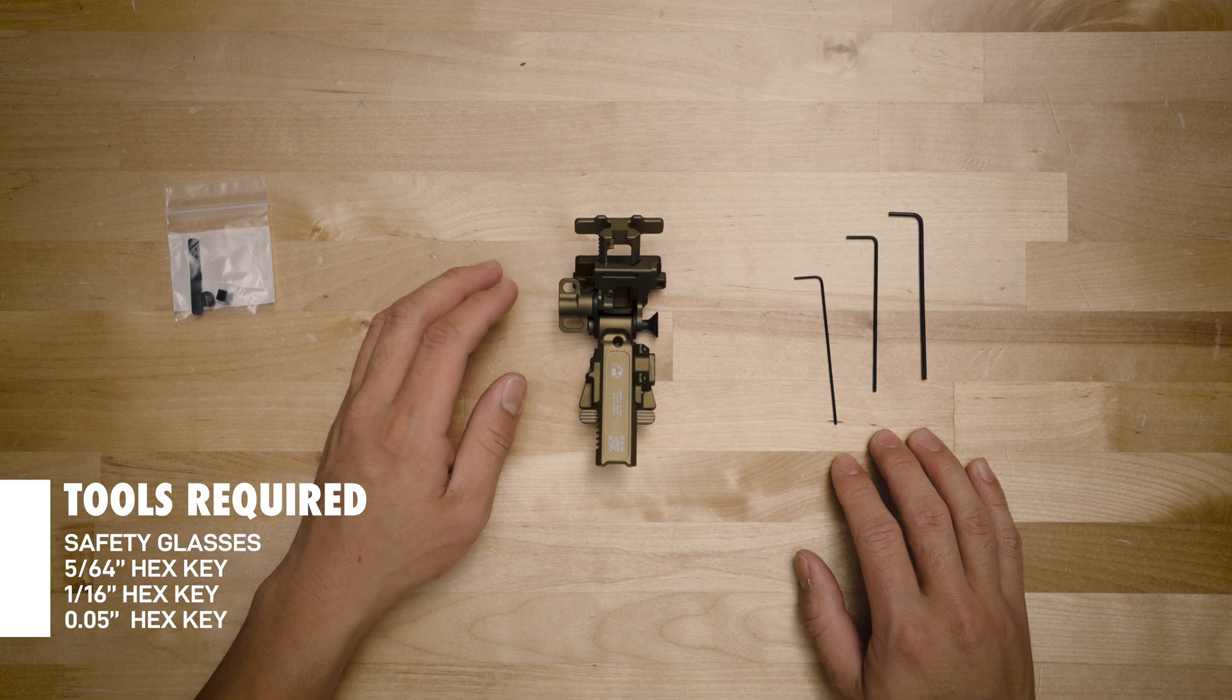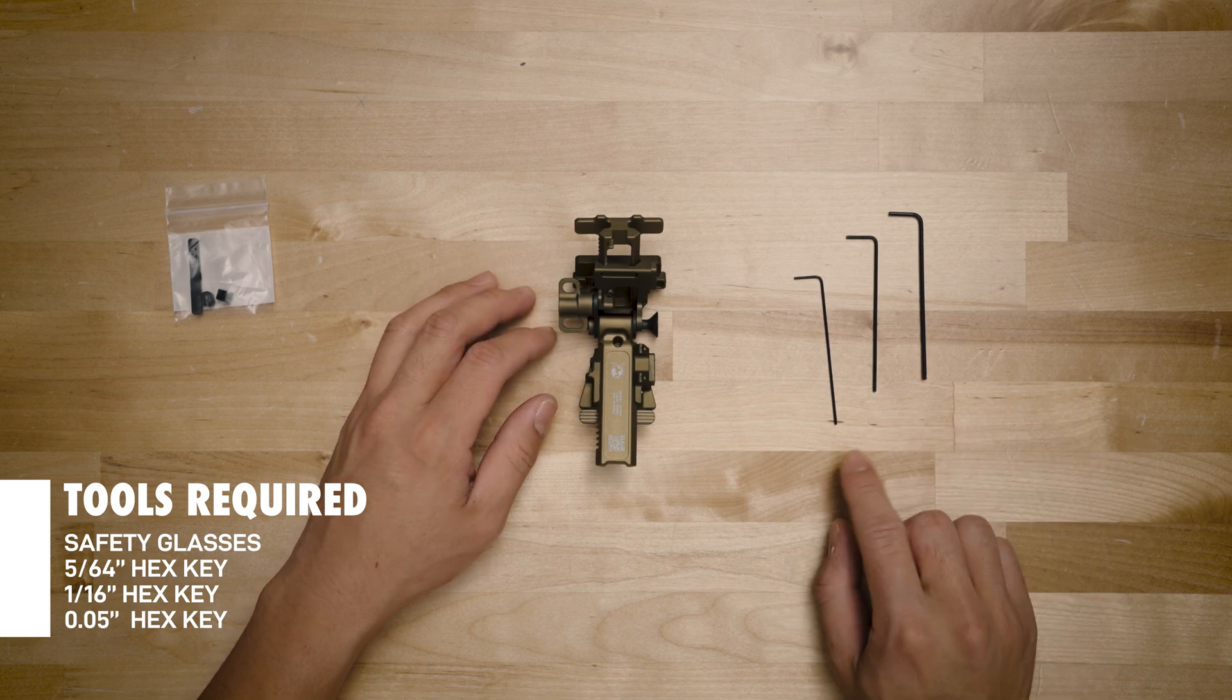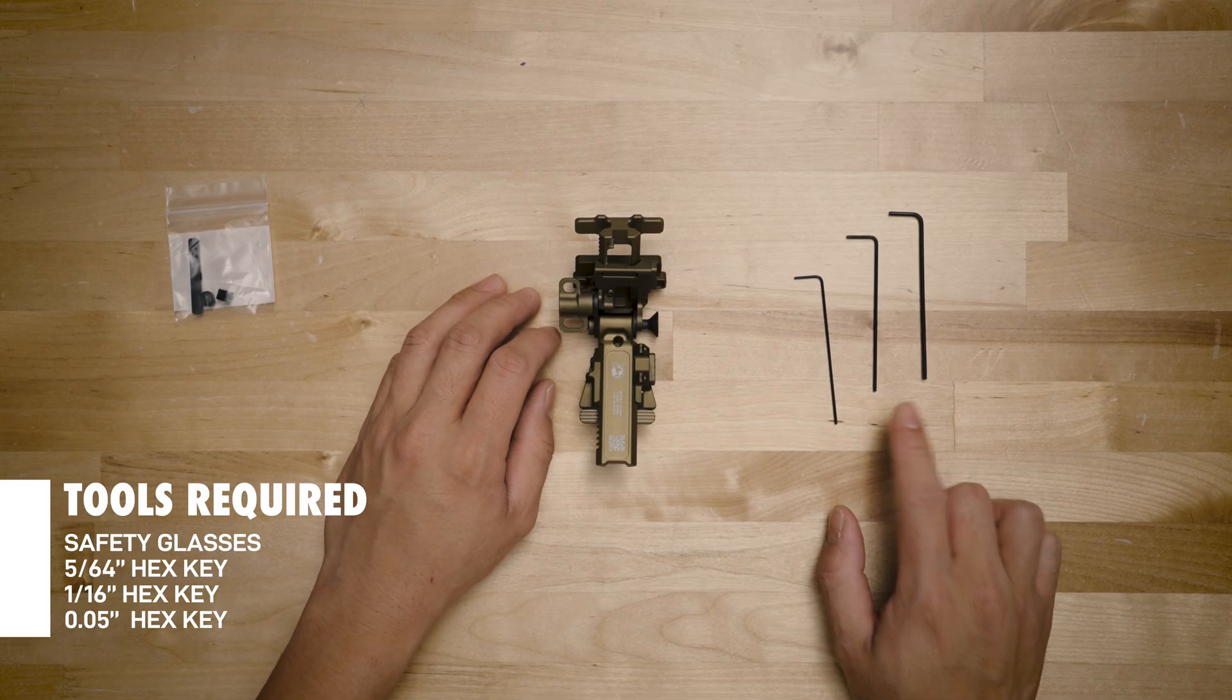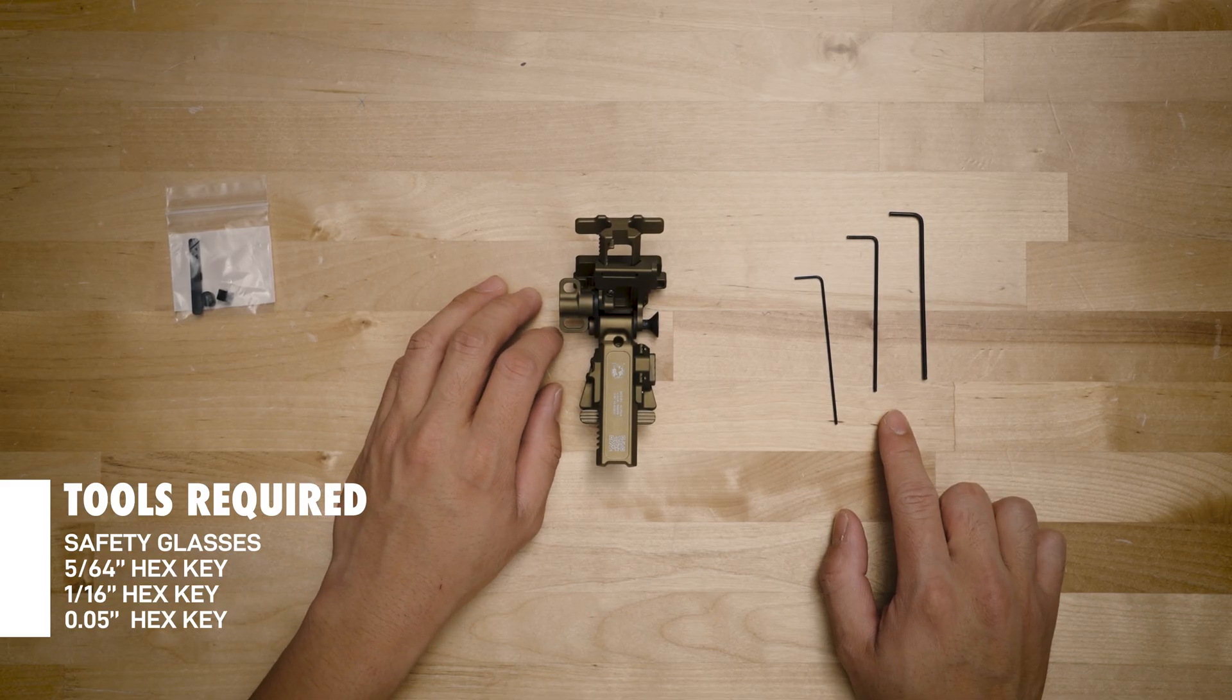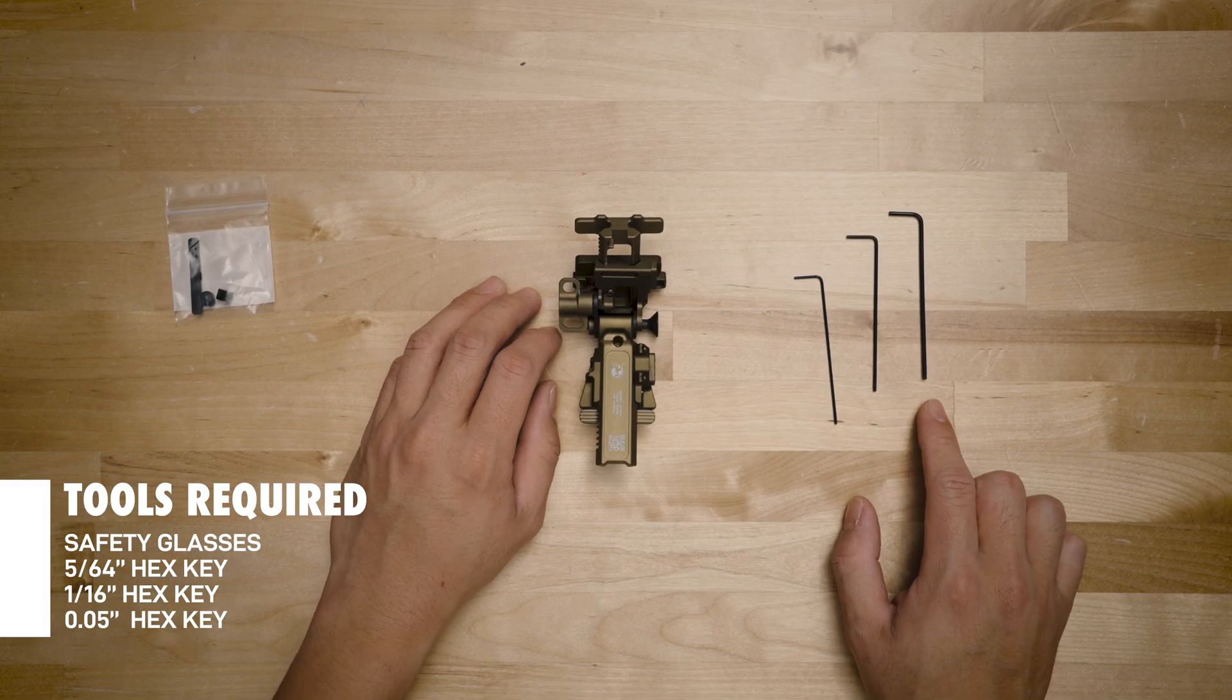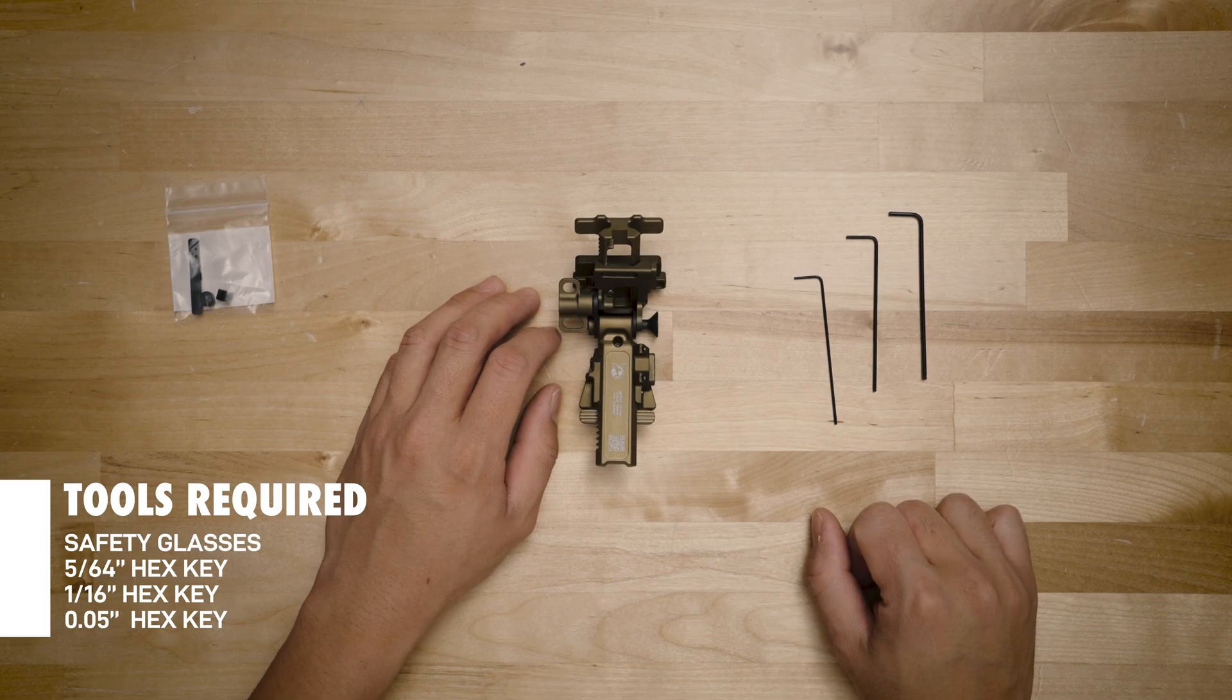So you're going to need three imperial allen keys for this, of various sizes for all the functions of this mount. One is going to be a 0.05 allen key. The next one is going to be a 1/16th allen key, and then the largest allen key you're going to need is a 5/64th allen key. I'll put all these over here somewhere, including the torque specs you need for each screw.